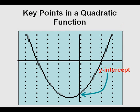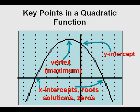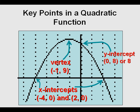There are key points in a quadratic function we're going to go over. First, there's a y-intercept — every quadratic function has one. There's a vertex, which will be a minimum for an upward-facing parabola, or a maximum for a downward-opening one. Quadratic functions most often have x-intercepts — also known as roots, solutions, and zeros — though it's possible to have just one or even none.